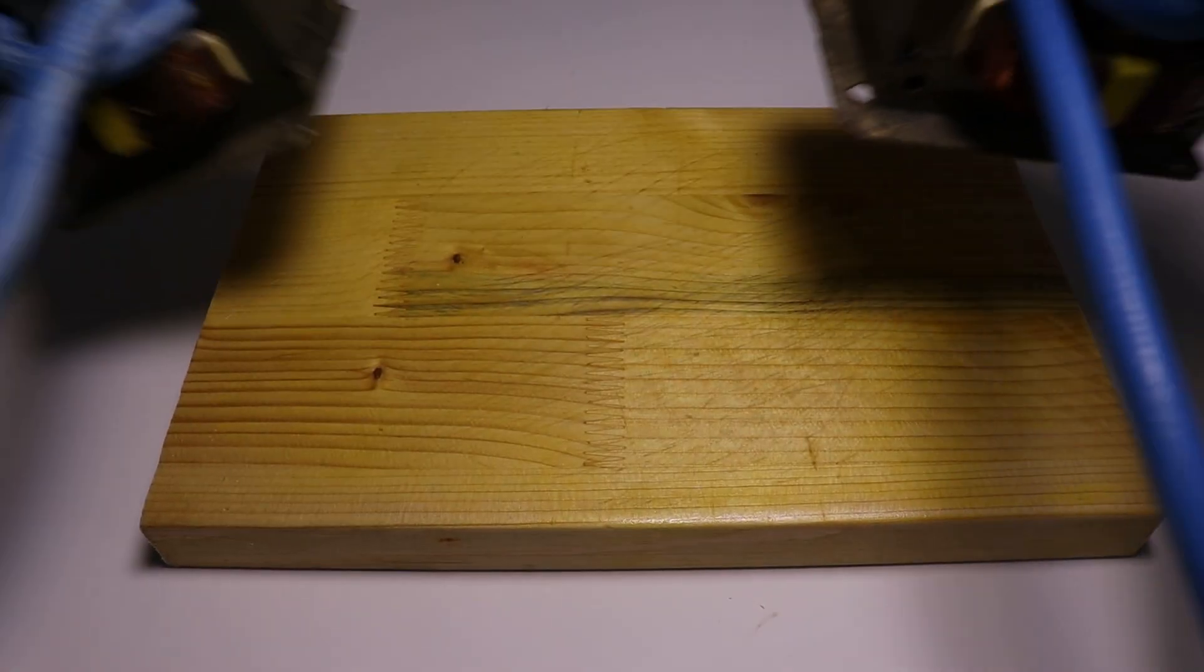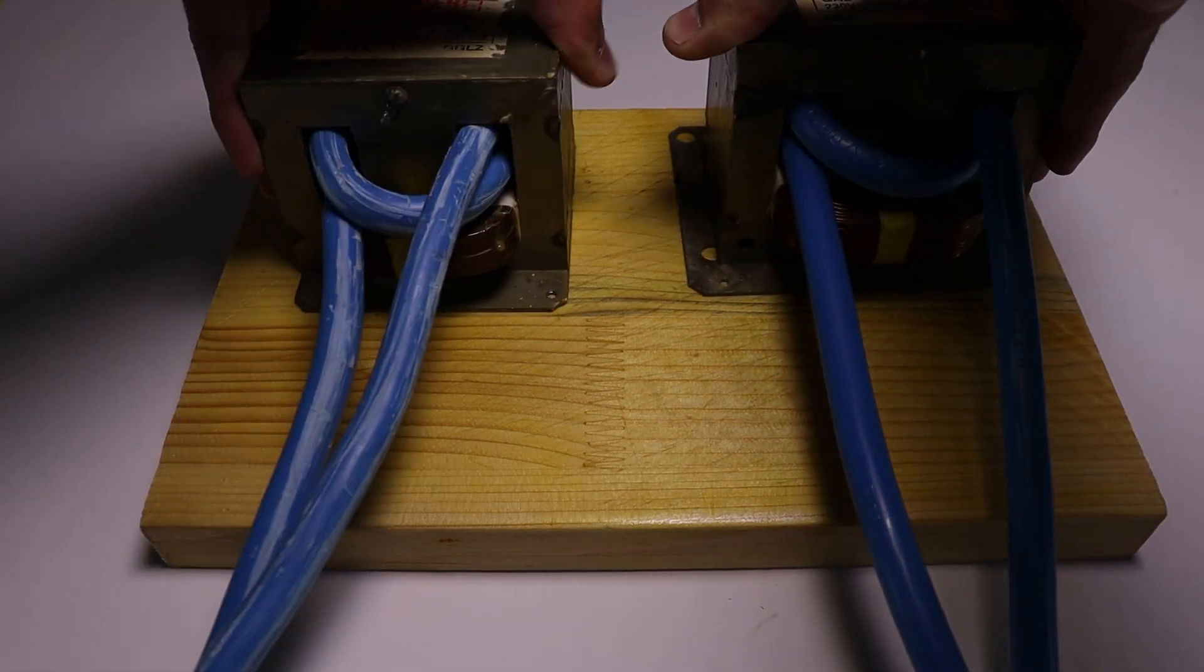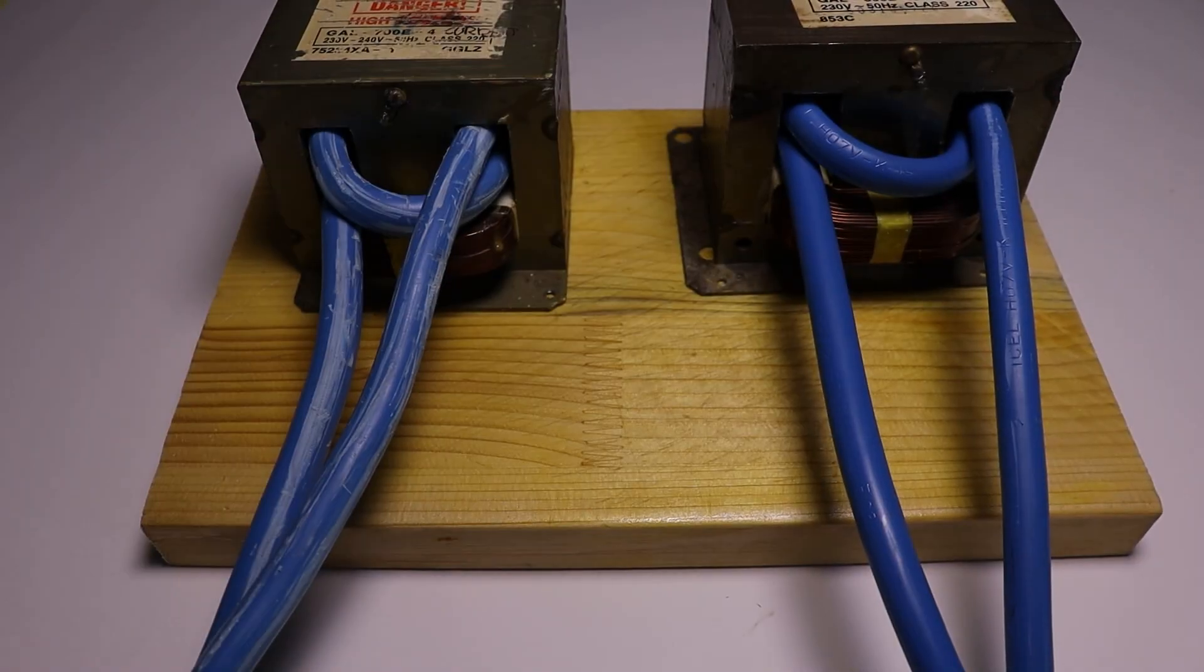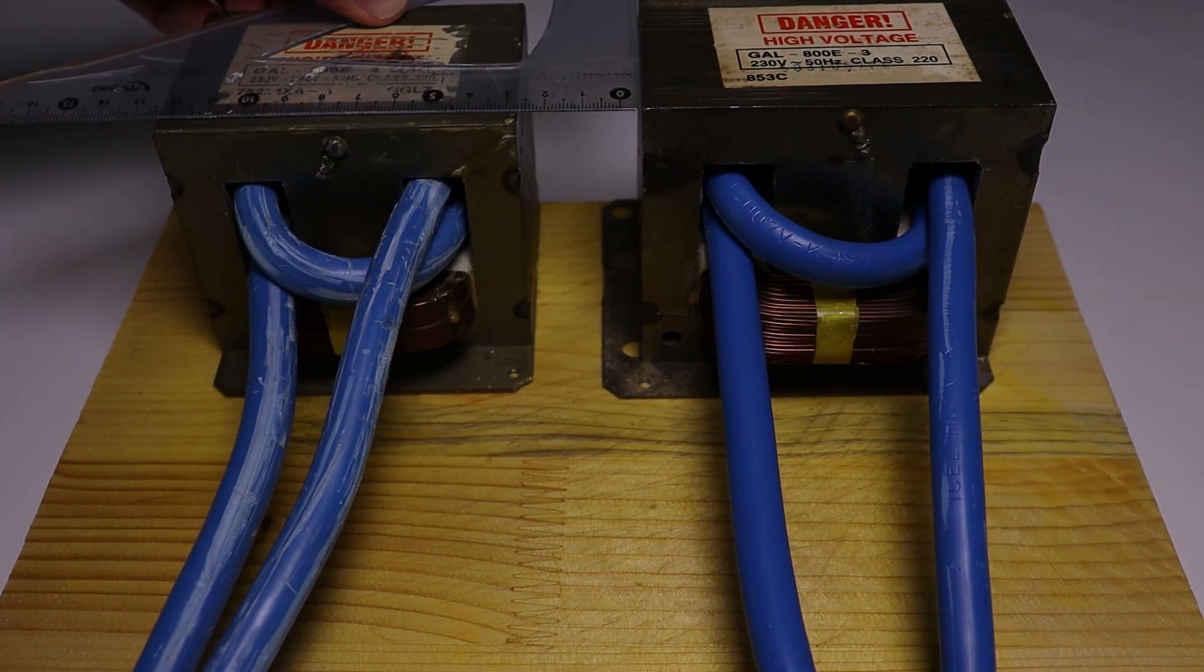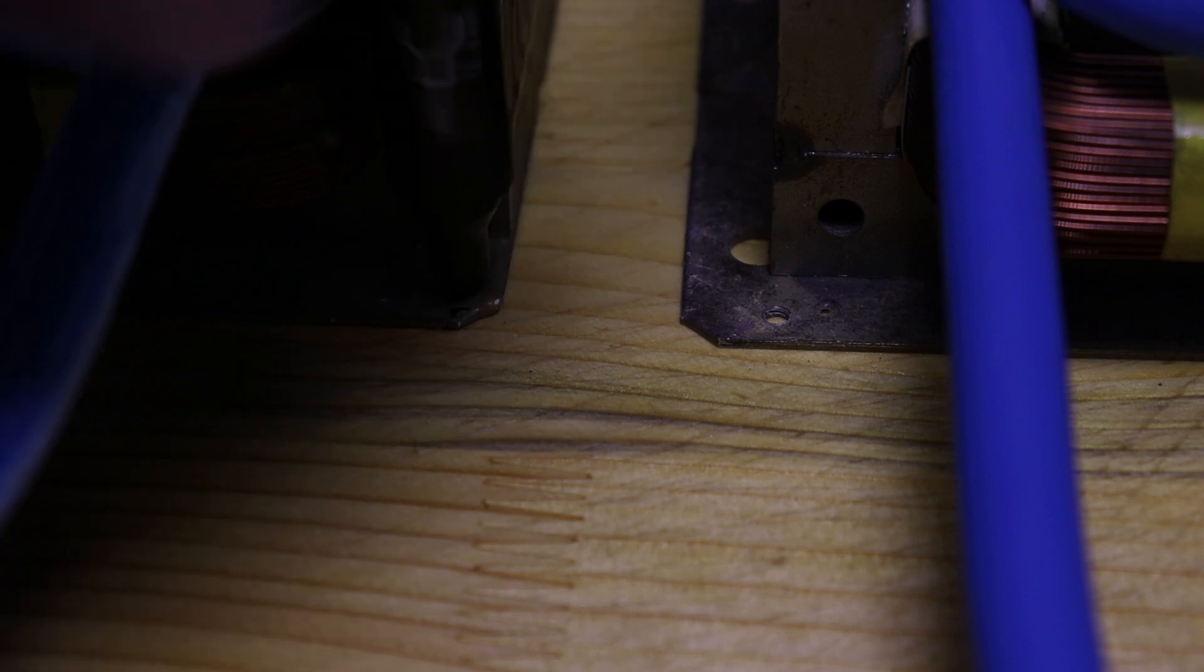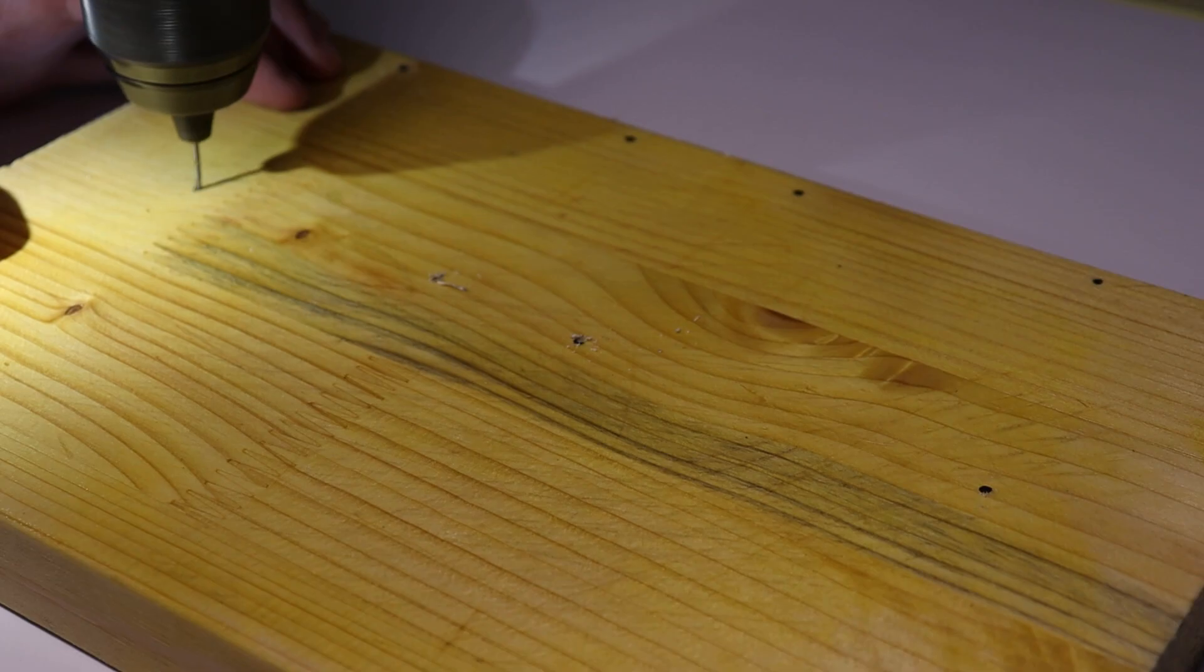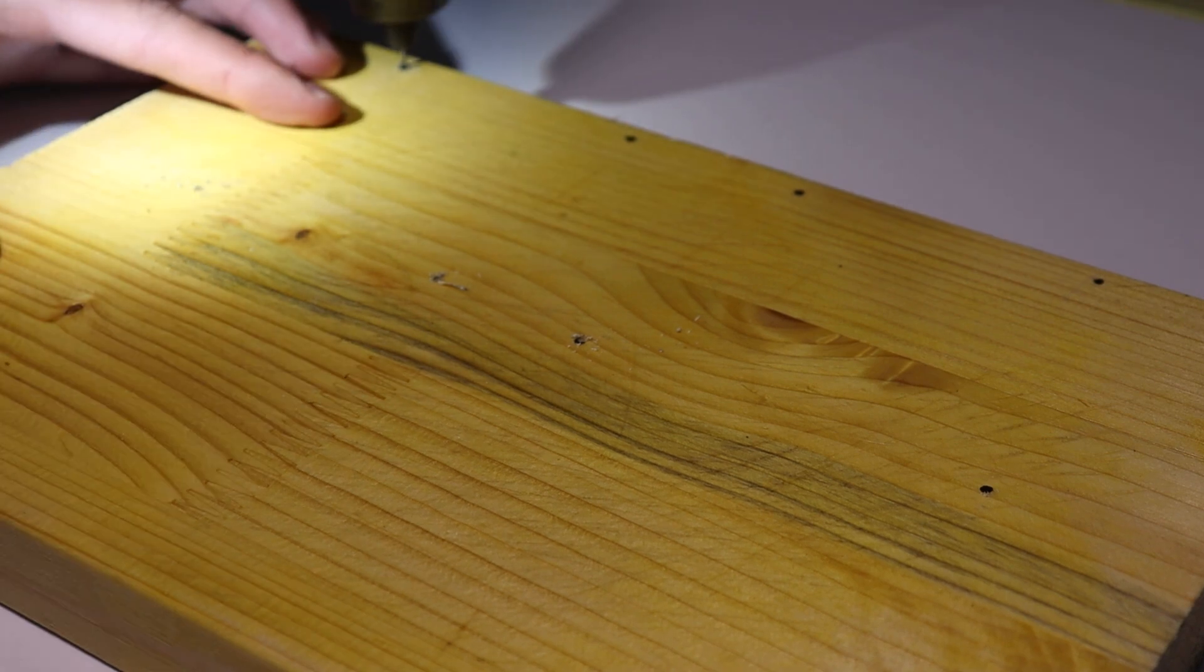Next I took a piece of wooden board which will be used as base for the project. So I took the transformers and laid them out just to see how it would all look at the end. And once I was happy with that, I used my ruler and took some quick measurements to fit everything perfectly in line.